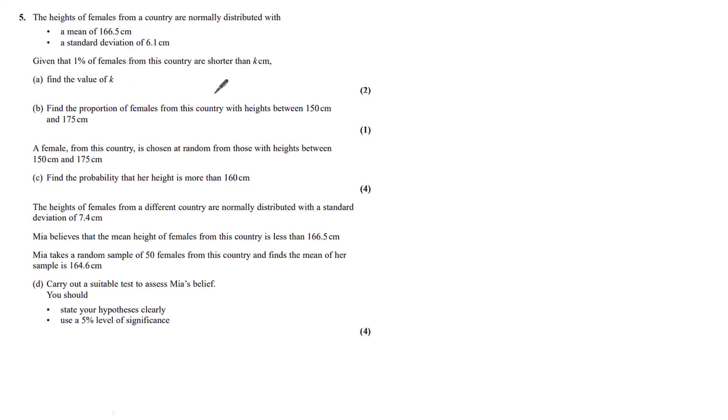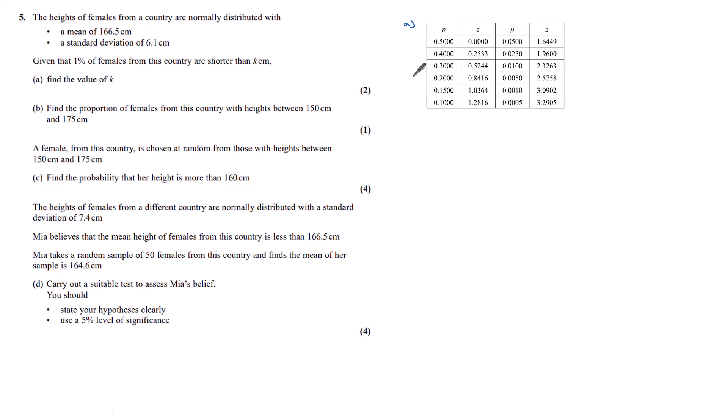So for this we're going to need to look at our standardised values. In our formula booklet we have some standardised values for a normal distribution. We're looking at a 1% value, so percentage of 1 is here in our table, 2.3263.